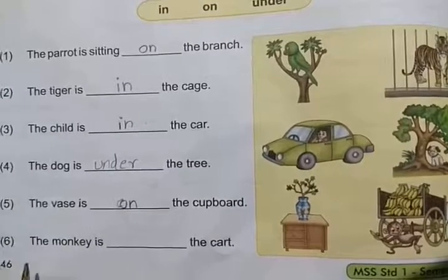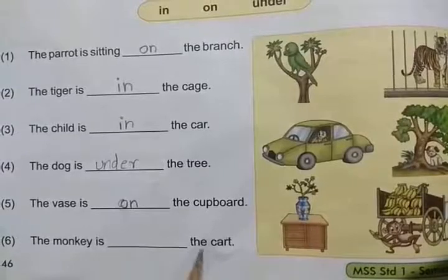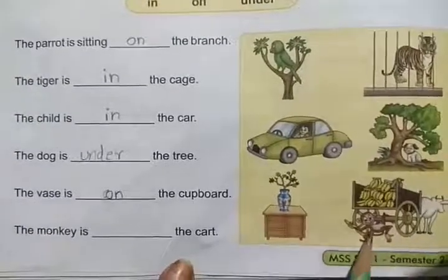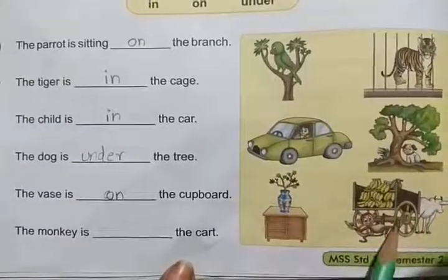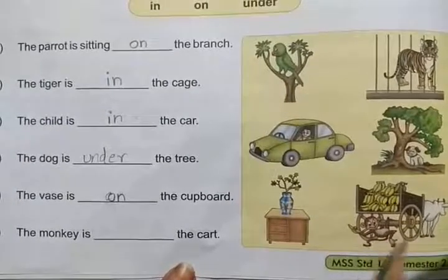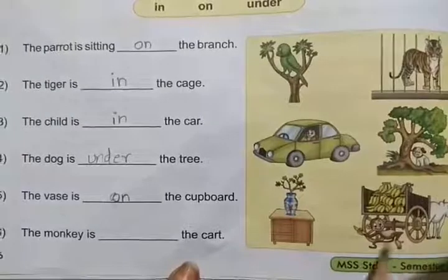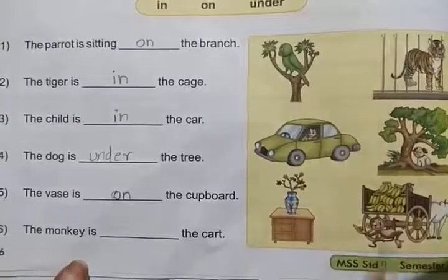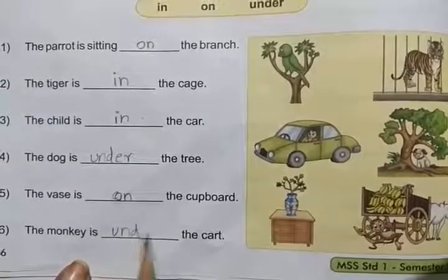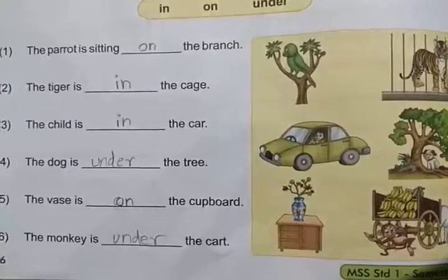Sixth one: The monkey is dash the cart. This is monkey and this is cart. Tell me — the monkey is dash the cart. In, on, or under? Under. Yes — U-N-D-E-R, under the cart.